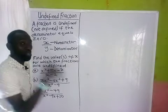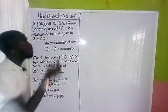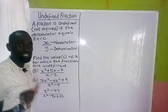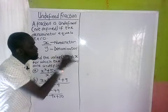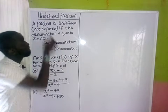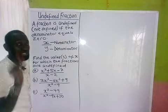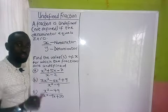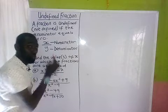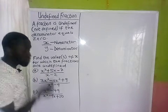A fraction must have two parts: the one on top that we call the numerator, and the one below that we call the denominator. So under undefined fractions, our analysis will be just on the denominator — we don't have anything to do with the numerator — because from the definition, a fraction is undefined if the denominator is equal to zero.